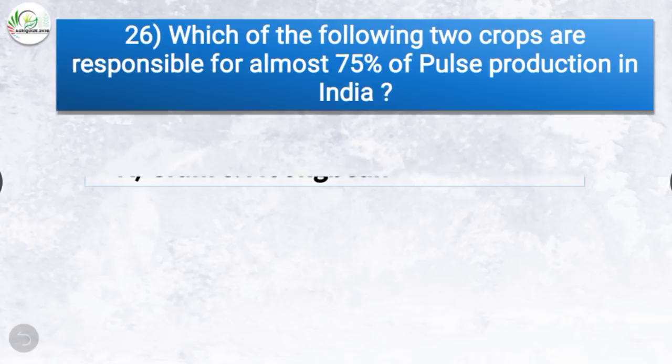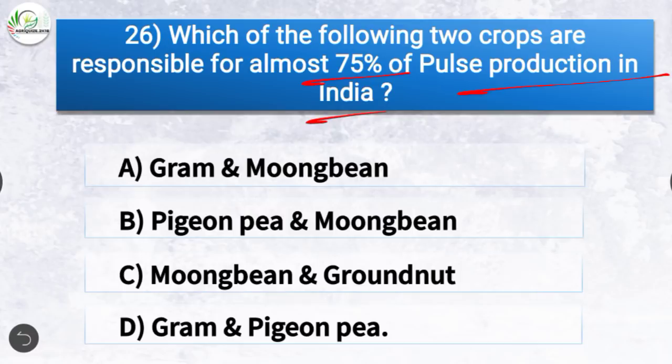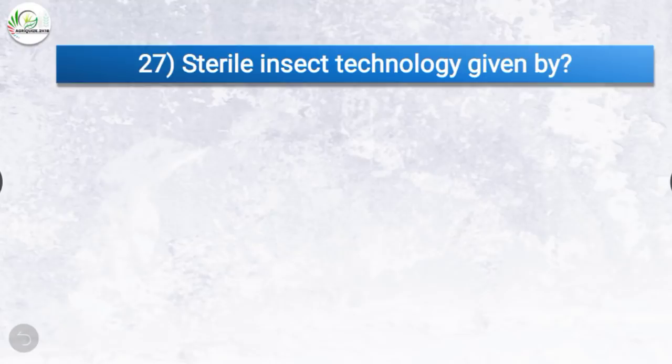Question number 26: Which of the following two crops are responsible for almost 75% of pulse production in India? The correct answer is option D, gram and pigeon pea. Gram and pigeon pea are the two crops responsible for almost 75% of pulse production in India.